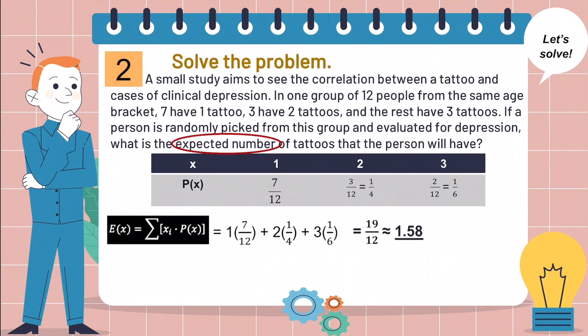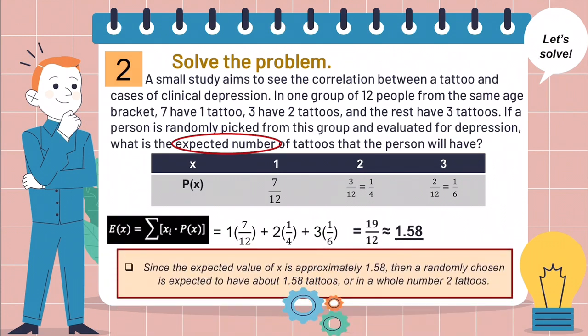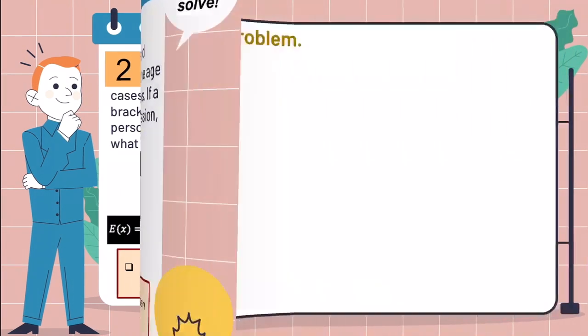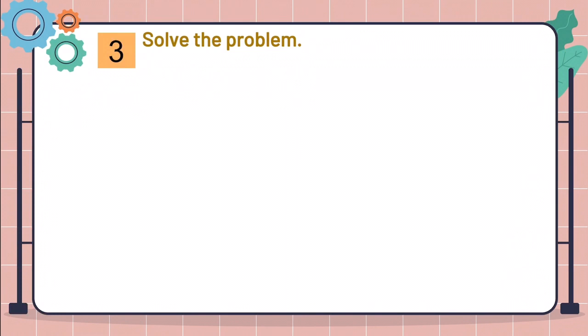We can now interpret the answer like this. Since the expected value of X is approximately 1.58, then a randomly chosen is expected to have about 1.58 tattoos, or in whole number, 2 tattoos. Now, let's proceed to another problem.